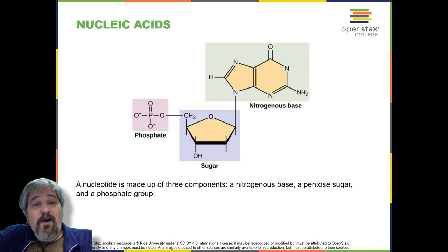DNA and RNA are made up of monomers known as nucleotides. The nucleotides combine with each other to form a polynucleotide. Each nucleotide is made up of three components: a nitrogenous base, a pentose (5-carbon sugar), and a phosphate group. Each nitrogenous base in a nucleotide is attached to a sugar molecule, which is attached to a phosphate group.